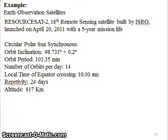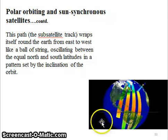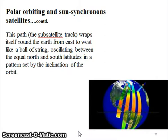Here is another example: IKONOS, which is also a sun-synchronous polar satellite placed at 681 km above. It also has a 10:30 a.m. solar time as the equator crossing time, and an inclination of 98.1 degrees. Swath is 11.3 km. Swath is actually the strip or track width that is traced by the satellite in every orbit.